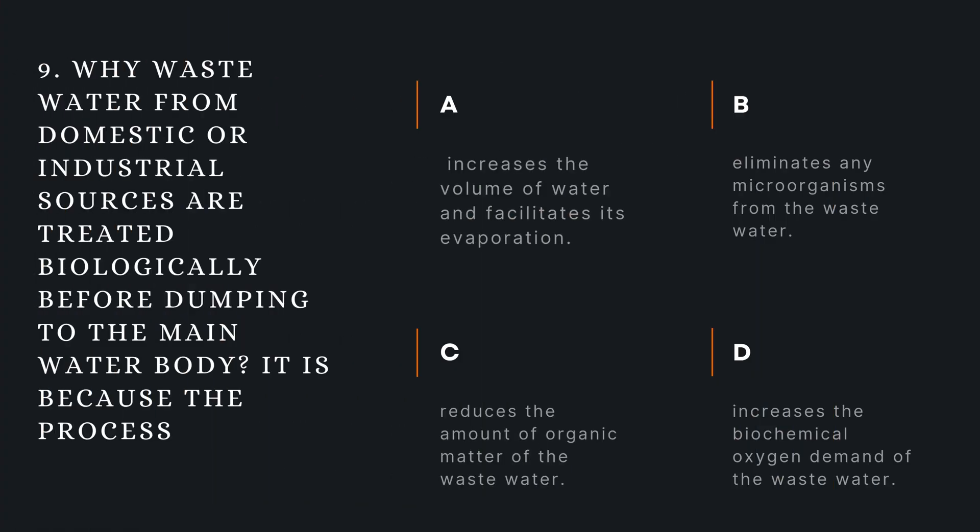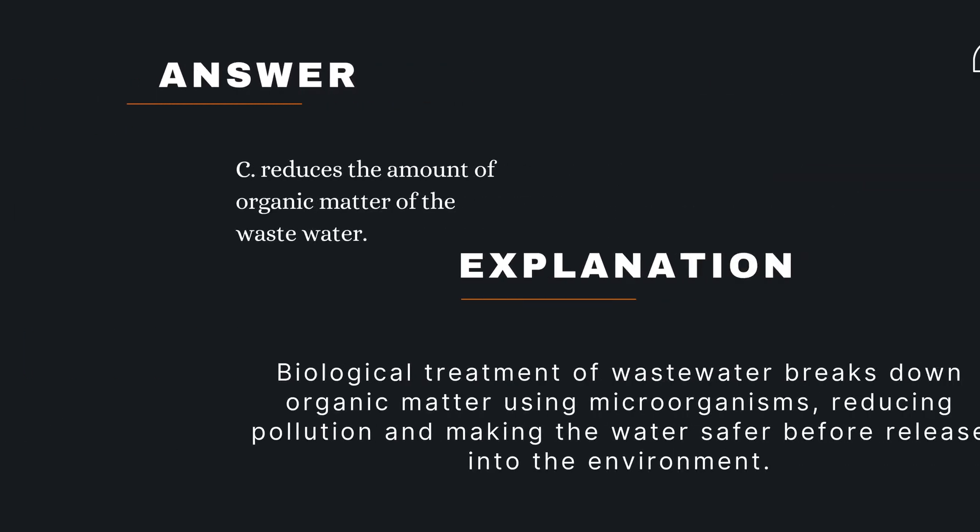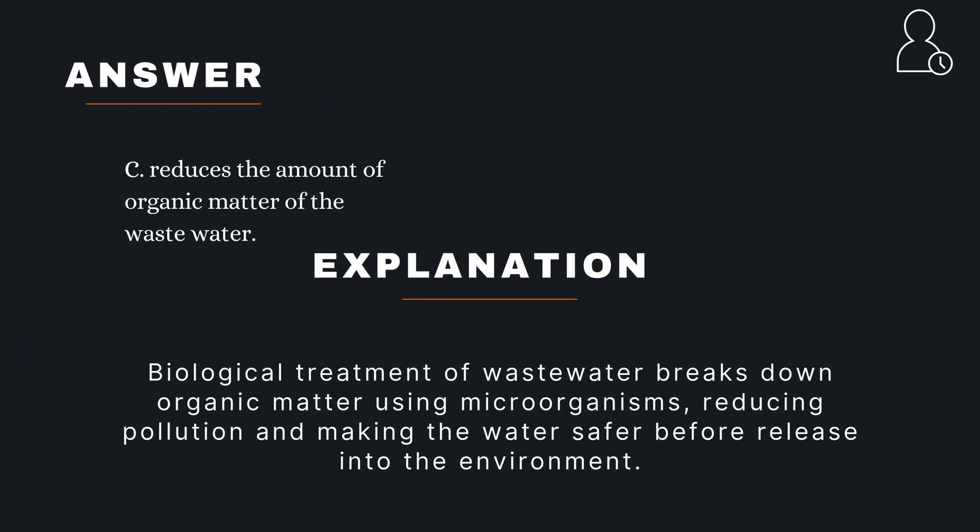Question 9. Why is waste water from domestic or industrial sources treated biologically before dumping to the main water body? A — increases the volume of water and facilitates its evaporation; B — eliminates any microorganisms from the waste water; C — reduces the amount of organic matter; D — increases the biochemical oxygen demand of the waste water. The correct answer is C — reduces the amount of organic matter of the waste water.